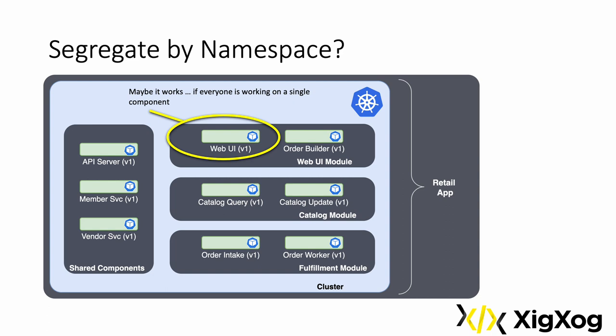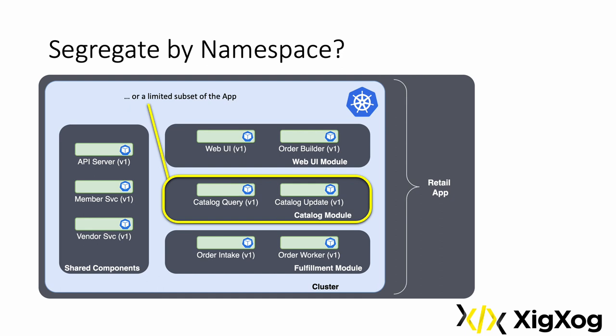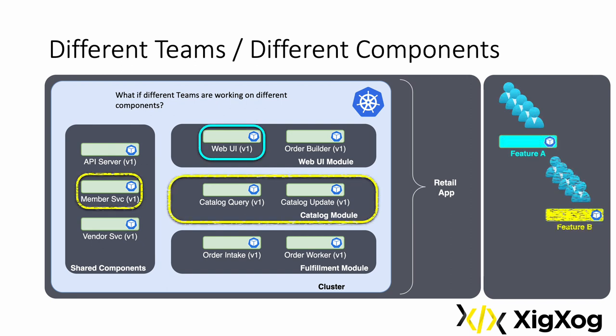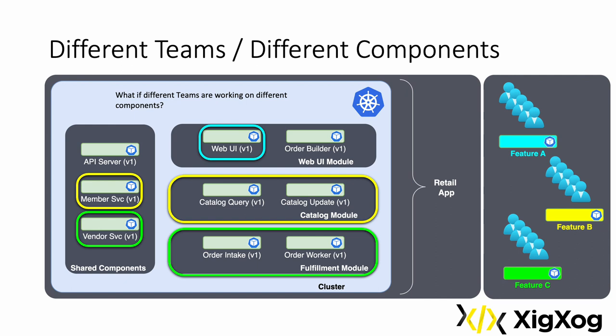Segregation by namespace may work if we're talking about a single component — configuration would be required, but the balance of the components could be shared across teams. And segregation may work if each team is working within a single module. The larger the subset of shared components, the easier and more efficient it will be to namespace each team and wire things together in a rational way. But these are really not realistic scenarios. What is far likelier is that each team is working on different components or a mixed set of components. The tipping point where it becomes impractical or too painful to share resources actually happens pretty quickly.